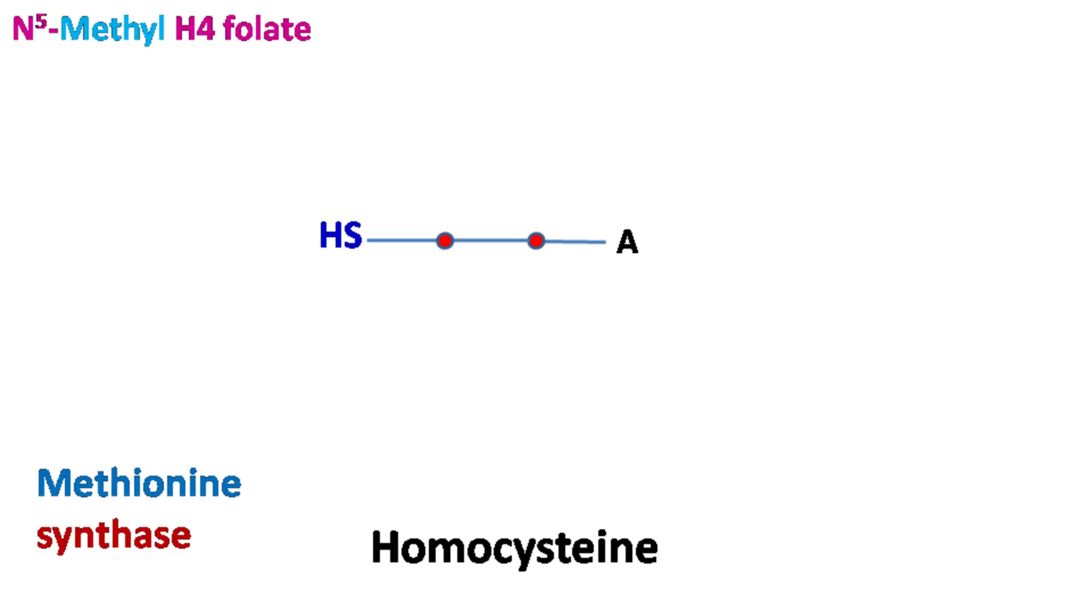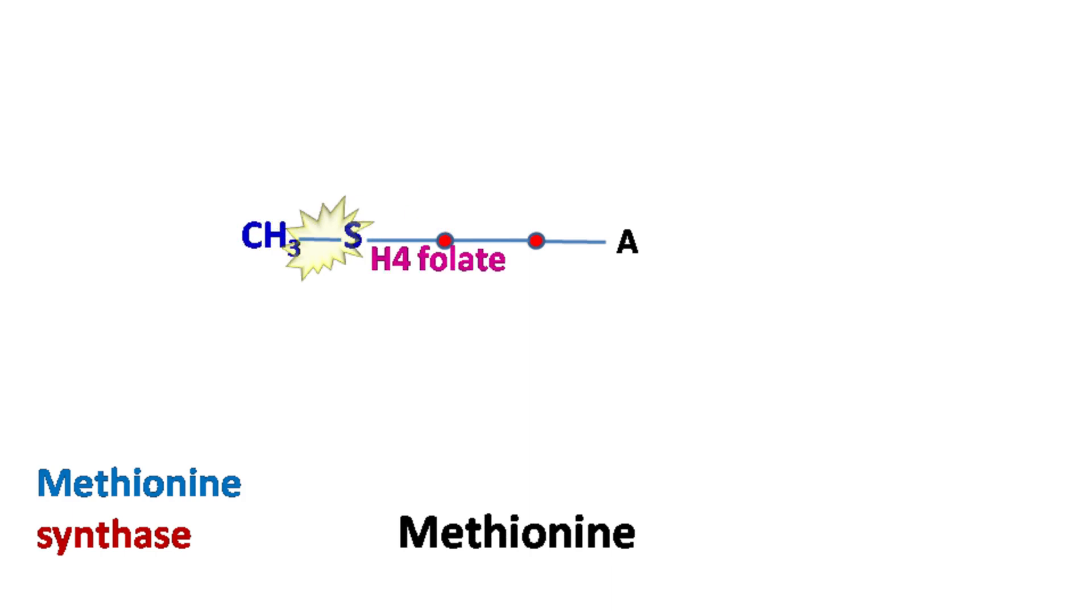Finally, methionine synthase transfers a methyl group from N5-methyl tetrahydrofolate to the SH group of homocysteine, resulting in the formation of methionine.